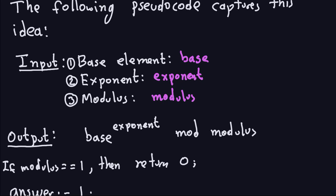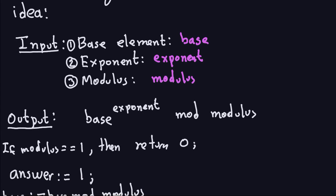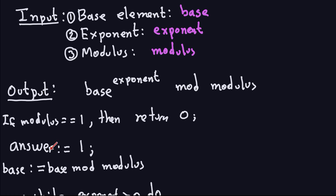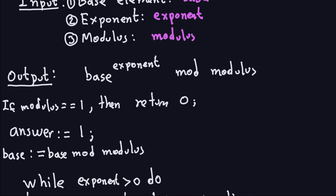I'll reduce the base right away because the base could be large — doing base mod modulus first means less computation. Then we enter a while loop. Inside the loop, if exponent mod 2 equals 1, it means there's a 1 at the rightmost position of the binary representation, so we multiply: answer = (answer × base) mod modulus. It's always good to take the modulus here because it keeps numbers smaller.